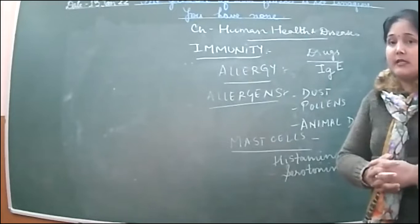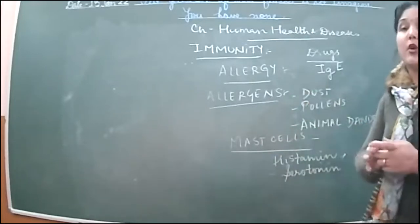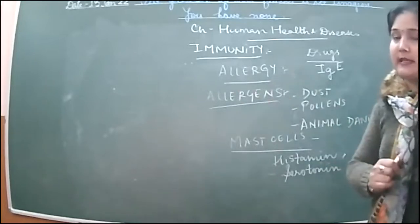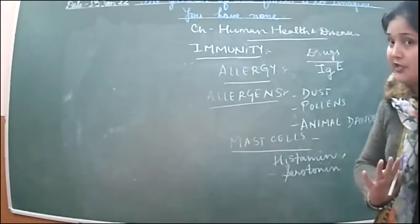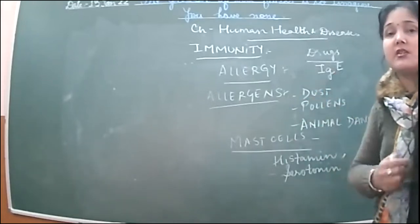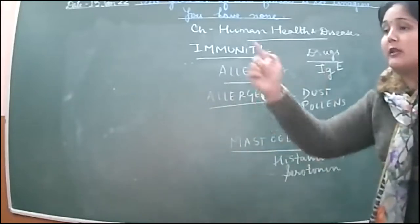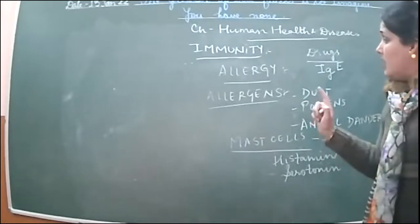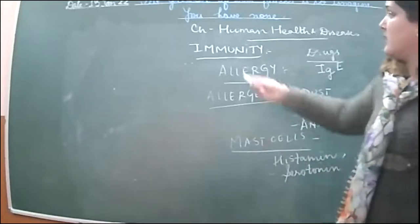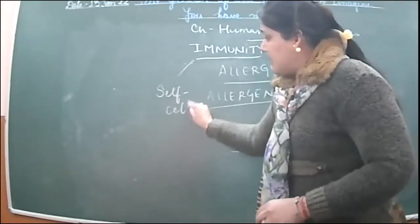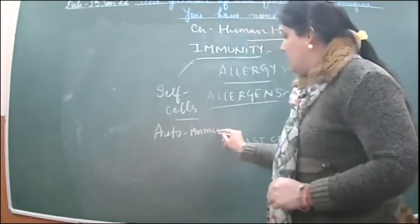But in a few conditions, there are certain immune responses created within our body that cannot differentiate between the self-cells and the external cells or the pathogens. When there is no such differentiation — if our body's own immunity goes to fight against the self-cells, our cells are fighting against our own cells — then we call it auto-immunity. This is called an auto-immune response.